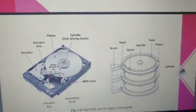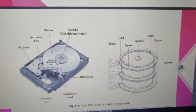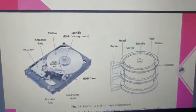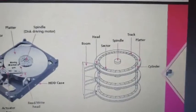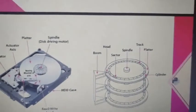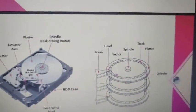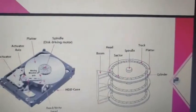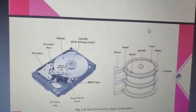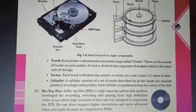A hard disk consists of solid round disks packed one on another, made up of magnetic material and sealed inside a case. Data is stored on platters in track, sector, and cylinder form. The hard disk has a head, a boom, a sector, a track, and a platter — all arranged in a cylindrical form.